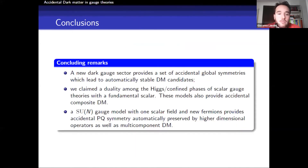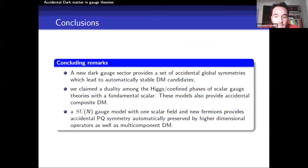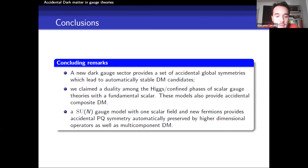In conclusion: a new dark gauge sector provides a set of accidental global symmetries which naturally lead to automatically stable dark matter candidates. We applied this framework to scalar gauge theories and claim a duality among the different phases of the theory whenever the scalar field is in the fundamental representation of the gauge group. We found that this model also provides accidental composite dark matter for both the fundamental and two-index representations. We studied the SU(2N) gauge model with new fermions, which provides an accidental Peccei-Quinn symmetry automatically preserved by higher-dimensional operators, such that gauge invariance leads to the solution of both the strong CP problem and the Peccei-Quinn quality problem, and furthermore gives multi-component accidental dark matter candidates. Thank you.